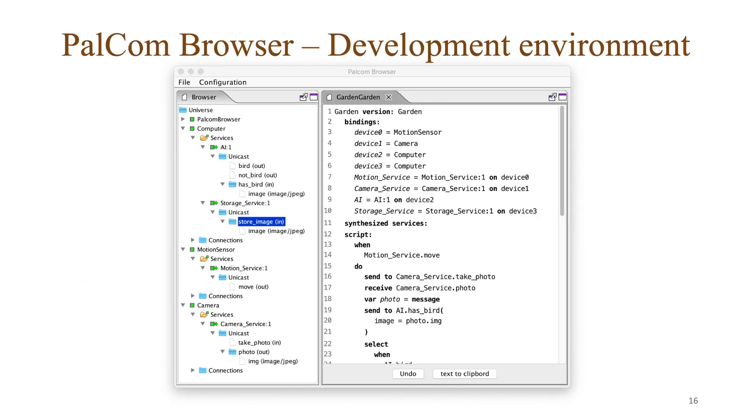The PALCOM browser is the development environment for COMPOS. To the left we see the services and devices available on the network. Here we see the AI service from the example that provides an interface for finding out if an image contains a bird or not.